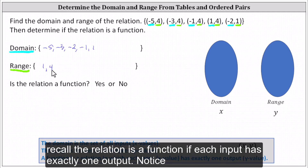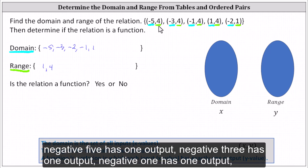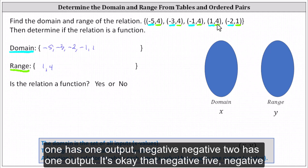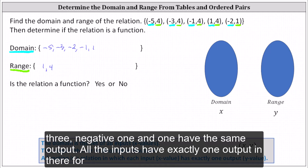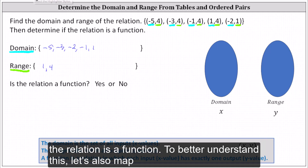Recall the relation is a function if each input has exactly one output. Notice negative five has one output, negative three has one output, negative one has one output, one has one output, negative two has one output. It's okay that negative five, negative three, negative one, and one have the same output. All the inputs have exactly one output, and therefore the relation is a function.